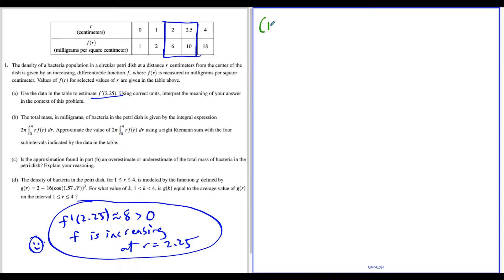For part B, we're doing a right Riemann sum, approximating this integral: 2π times the integral from 0 to 4 of r f of r dr. The approximation—2π is constant, so we leave this outside. But what makes this tricky is the r f of r dr piece inside. For density integrals, that r f of r piece is tricky to deal with.